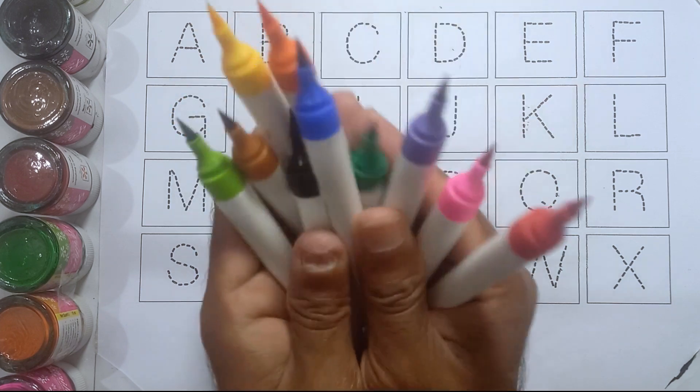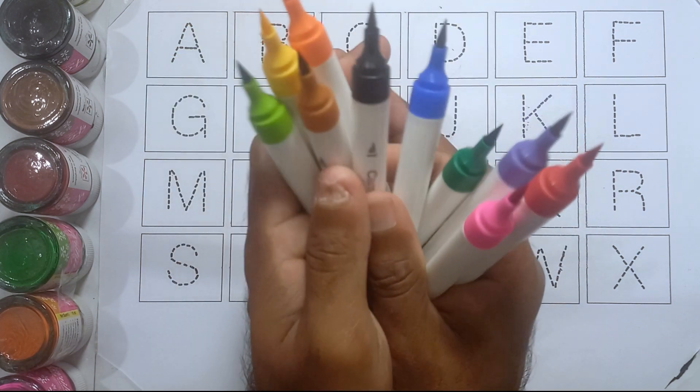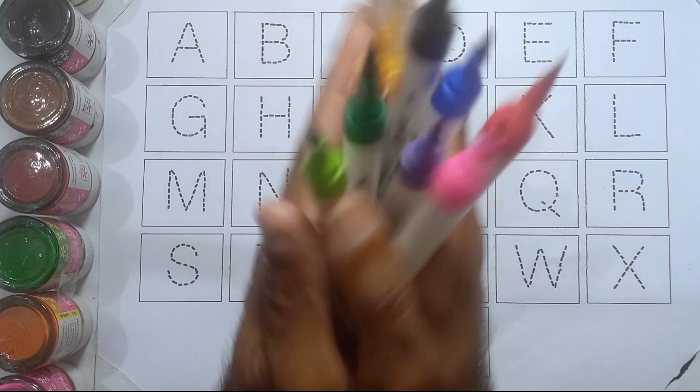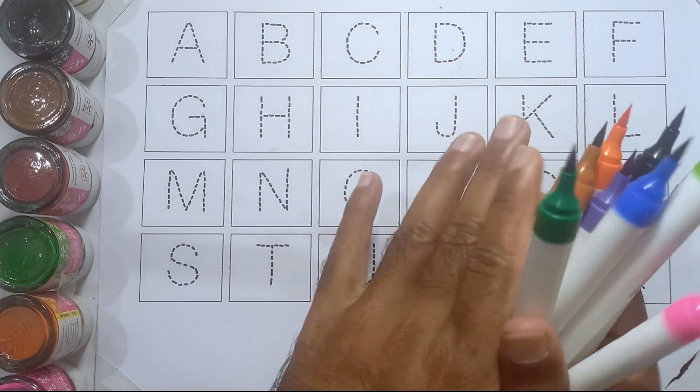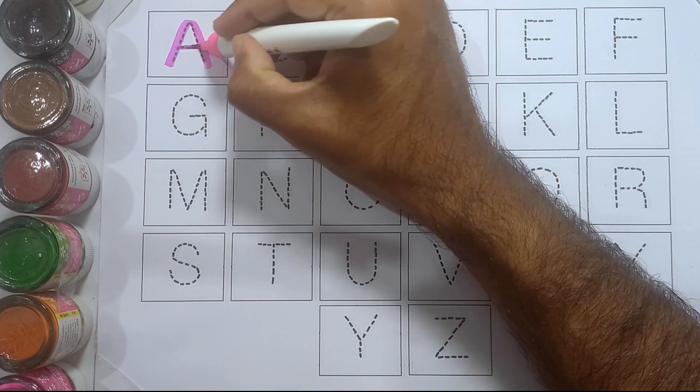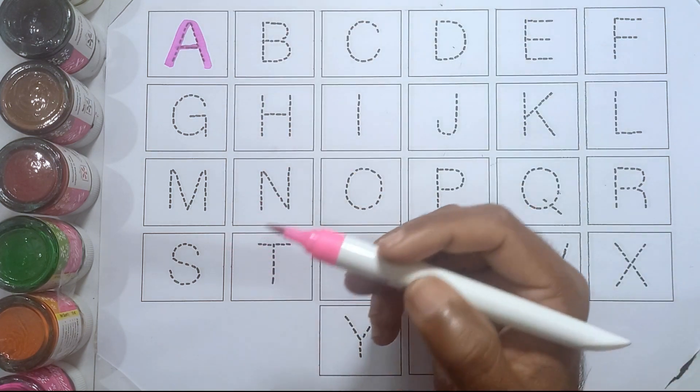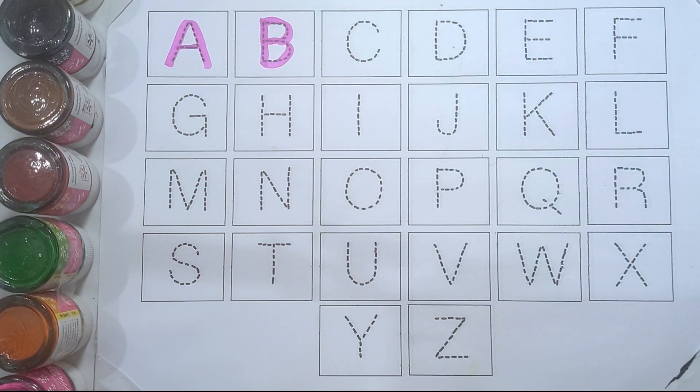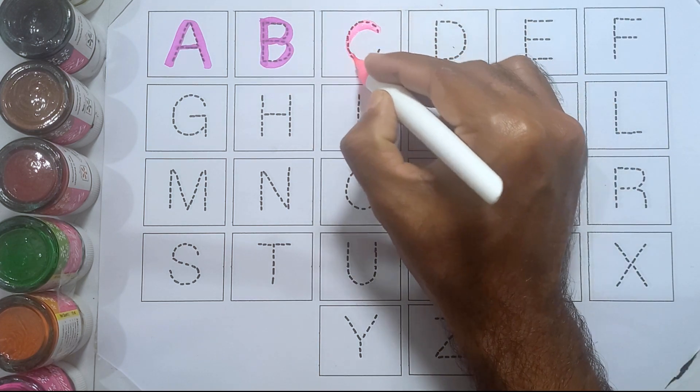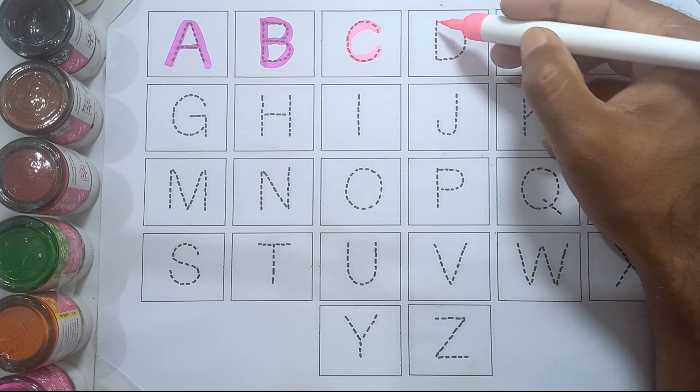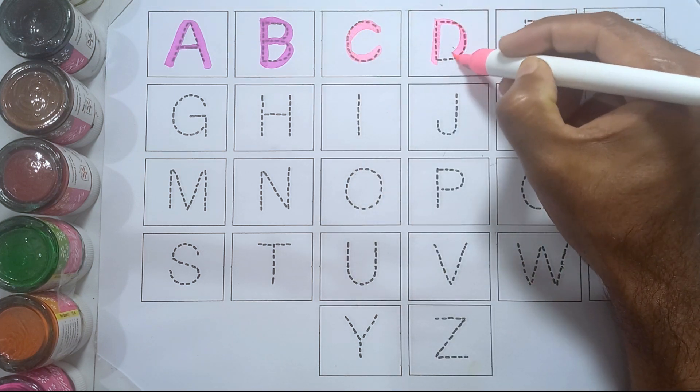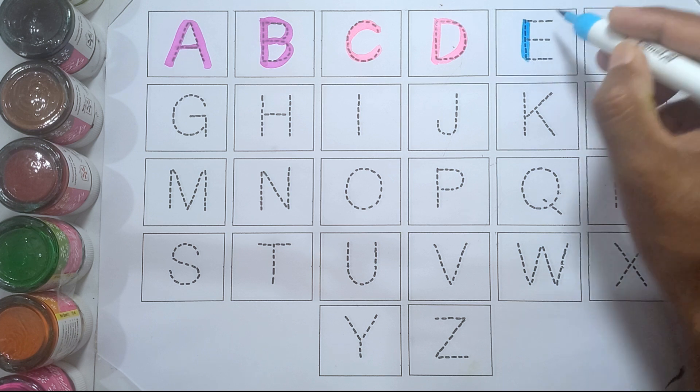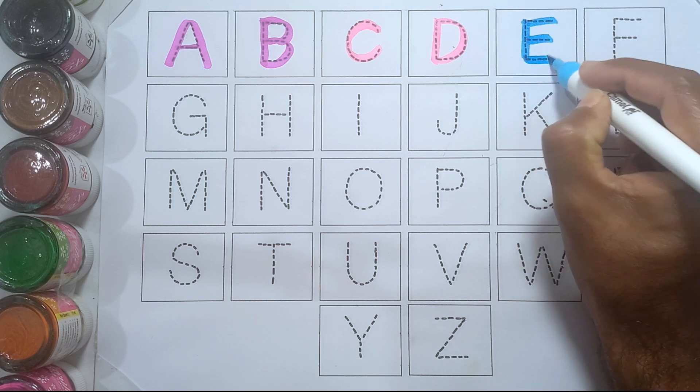Hello kids, welcome to another video. Today we'll learn alphabet A to Z with your favorite YouTube channel. Let's start. A, A for ant. B, B for bird. C, C for car. D, D for dog. E, E for elephant.